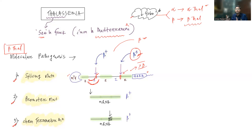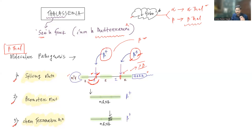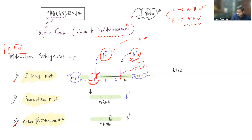When the mutation is at the junction, there is no normal splicing and no beta globin production — that is beta zero. When the mutation is inside the intron, sometimes normal splicing occurs and some beta globin is produced, sometimes abnormal splicing occurs — this is denoted as beta plus, meaning some beta globin production is possible. Splicing mutations are the most common cause of the beta plus variant.